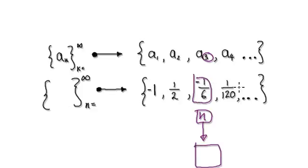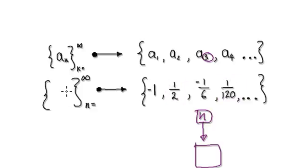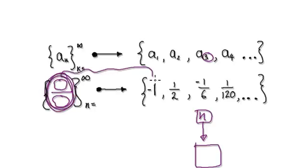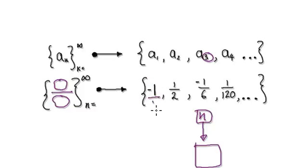If you look at these terms, they are all fractions. So the answer must be in the form of a fraction. Let's turn any integer terms into fractions as well — imagine them written over 1. So now, starting from any n, we need to generate the correct fraction.